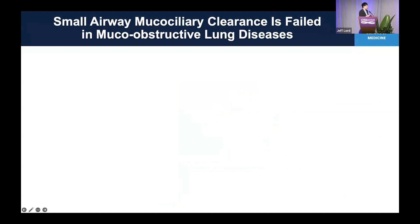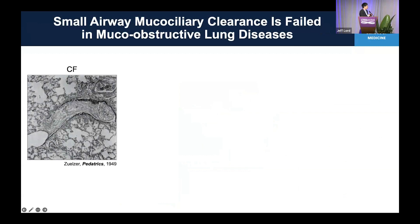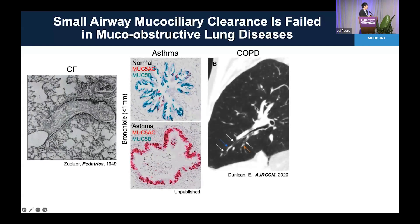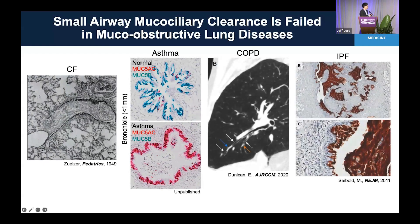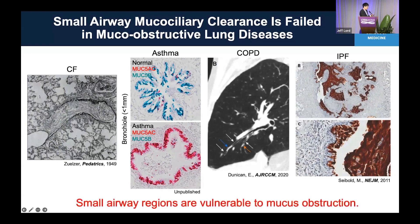Indeed, small airways are affected in muco-obstructive lung diseases including CF, asthma, COPD, and also IPF. CF is characterized by mucus obstruction particularly in small airways. In asthma, the mucin component is totally changed from MUC5B, which maintains mucin, to MUC5AC, which is stickier mucus. In COPD, disease severity and mucus obstruction are strongly correlated, and in IPF, mucin overproduction and accumulation in the small airway region is a major problem.